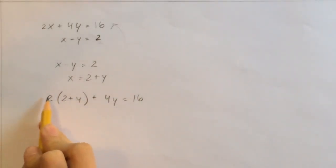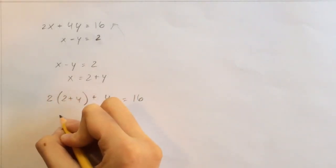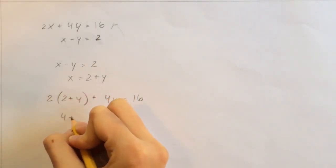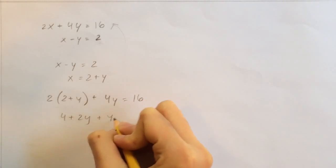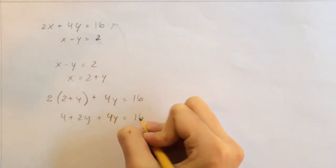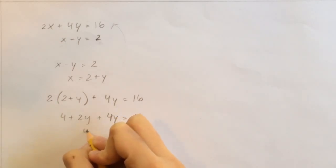So now we can do distributive property here. So that would be 4 plus 2y plus 4y equals 16. These two added together, 4 plus 6y equals 16. 6y equals 12. y equals 2.